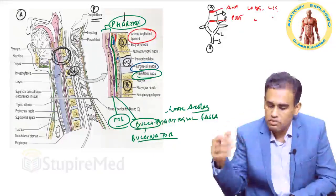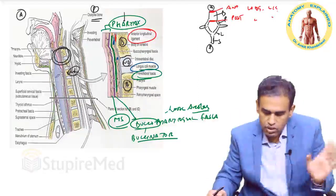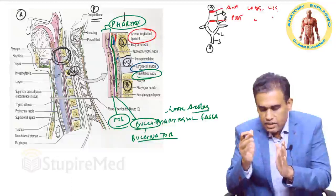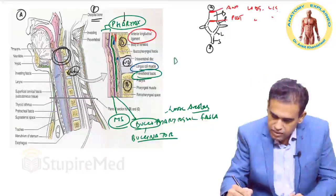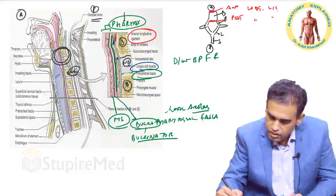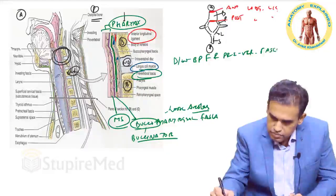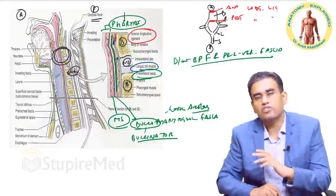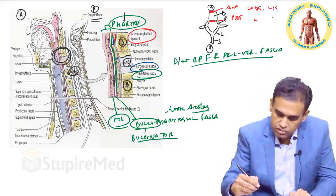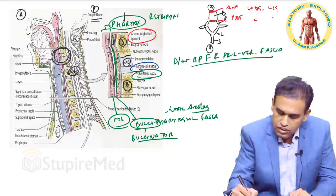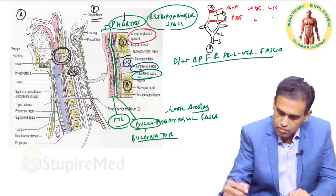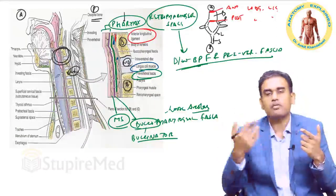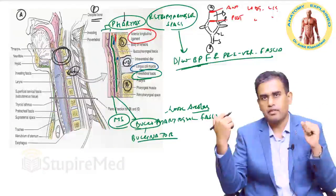The buccopharyngeal fascia is actually a loose areolar tissue forming the outer wall of the pharynx. So the mucosa, muscle, then this loose areolar tissue. The white area between the buccopharyngeal fascia and your prevertebral fascia — that space is behind the pharynx, so we call it the retropharyngeal space. It lies between the buccopharyngeal fascia (outermost layer of pharynx) and the prevertebral fascia covering the prevertebral muscles.